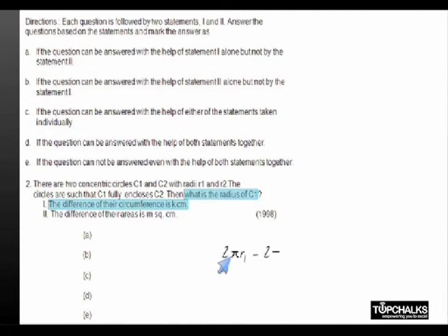This equals k centimeters, or 2π(r1 - r2). This statement alone is not sufficient to find out what is the value of r1. If you look at the second statement, the difference in the areas is m square centimeters.